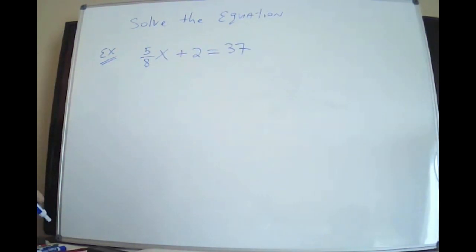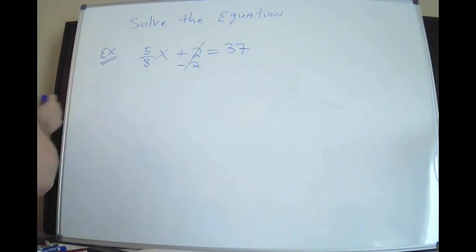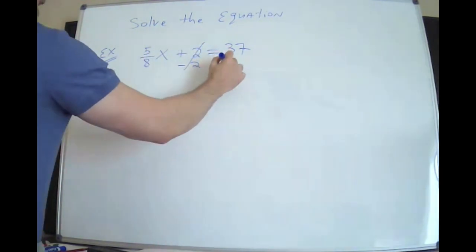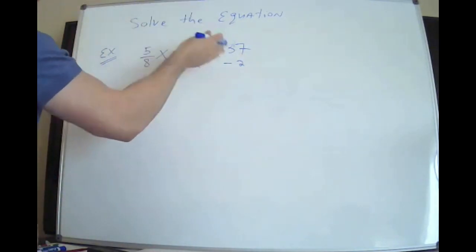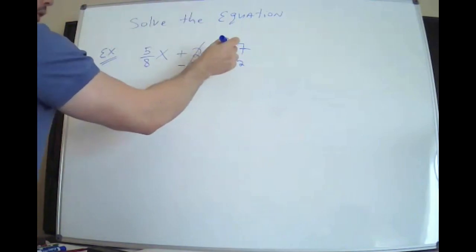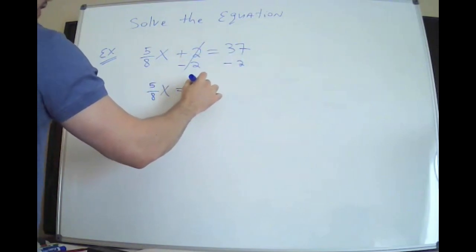All right. So the fourth one, certainly the hardest of all of them, you have 5 over 8x plus 2 is 37. First thing is easy to get rid of. I have a plus 2 on the left that I don't want there. So I'm going to subtract 2 to eliminate that. Opposite of adding 2 is subtracting 2. But, again, to maintain the balance, whatever you do to the left, you must do to the right, and you must show it. So now the plus 2 on the left is gone. 37 minus 2 is 35.